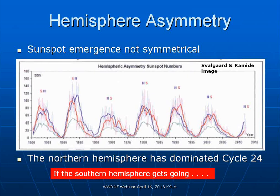Sunspots are not symmetrical between solar hemispheres — they emerge with some preferential concentration in one hemisphere at different times. So far for cycle 24, the northern hemisphere has dominated — most sunspots have appeared in the northern hemisphere of the sun. Based on history — looking back through the past six solar cycles — the southern hemisphere eventually gets going. In fact, solar cycle 20 showed a similar asymmetry: the northern hemisphere dominated for about two years before the southern hemisphere caught up and added to the total.